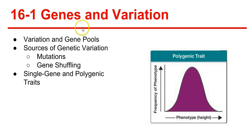Variation and gene pools. A gene pool consists of all genes, including all the different alleles that are present in a population. Because members of a population interbreed, they share a common group of genes. The relative frequency of an allele is the number of times that allele occurs in a gene pool compared with other alleles for the same gene, expressed as a percentage. Gene pools are important to evolutionary theory because evolution involves changes in populations over time. In genetic terms, evolution is a change in the relative frequency of alleles in a population.